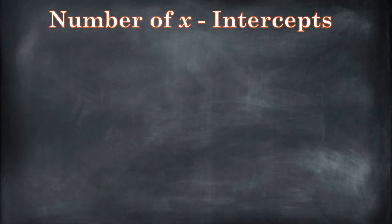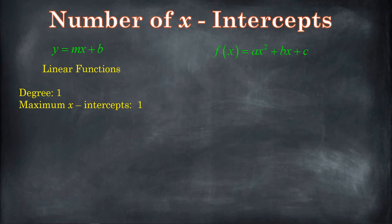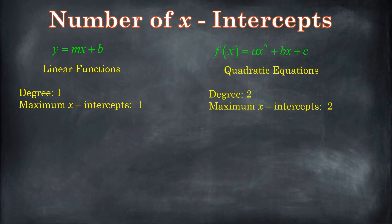Now let's talk about the number of x-intercepts. If you have a linear equation, y equals mx plus b, it has a degree of one, and it's going to have at most one x-intercept. It could have zero — like y equals three has no x-intercepts whatsoever — but the most it's going to have is one. If you have a quadratic equation, ax squared plus bx plus c, that has a degree of two. It could have zero, one, or two x-intercepts. The maximum number of x-intercepts a quadratic will have is two.